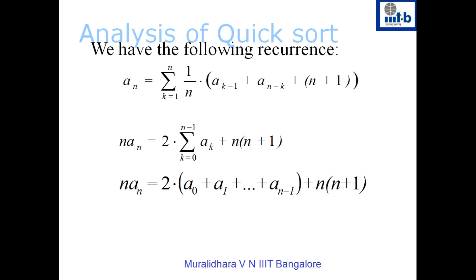The factor 1/n is independent of the summation, so it can come out. We write 1/n outside the summation and multiply both sides by n. On the left hand side we have n times A(n). The summation has two terms: when k goes from 1 to n, the first term runs from A(0) to A(n-1) and the second term runs from A(n-1) to A(0). Together these give 2 times the summation from k equals 0 to n minus 1 of A(k).